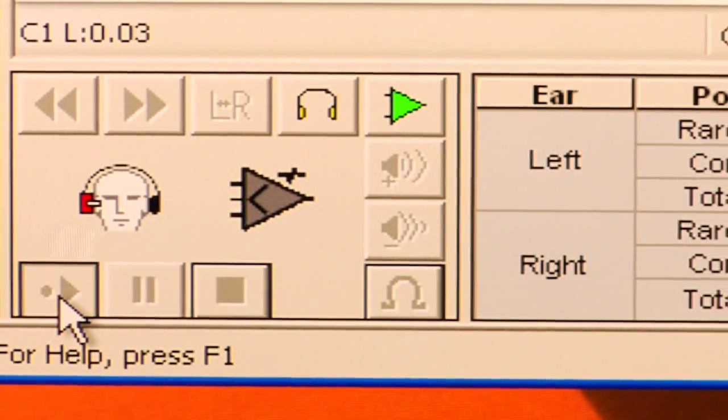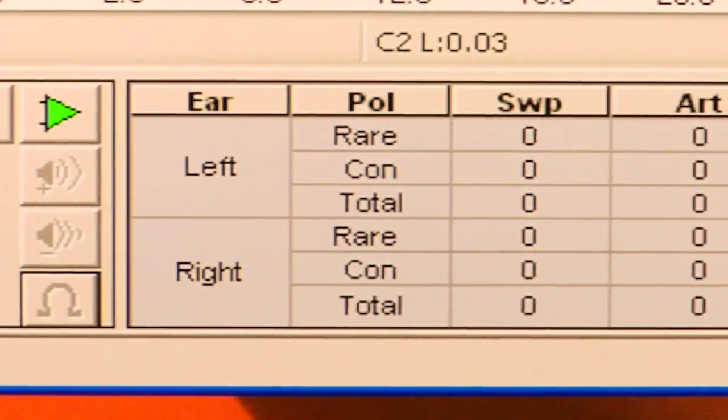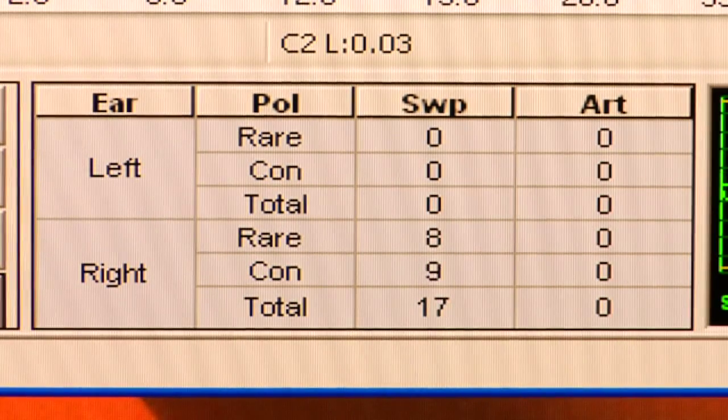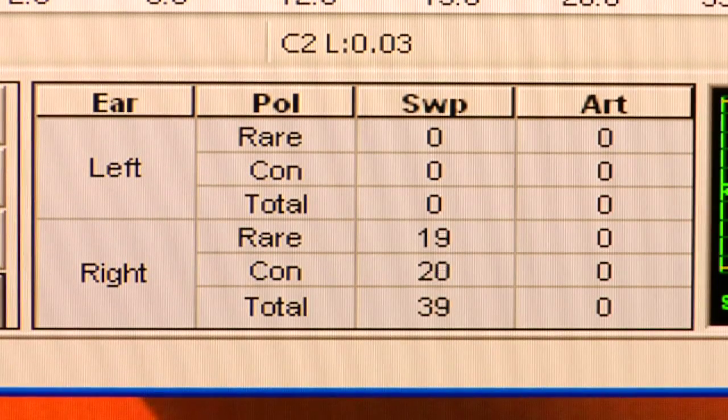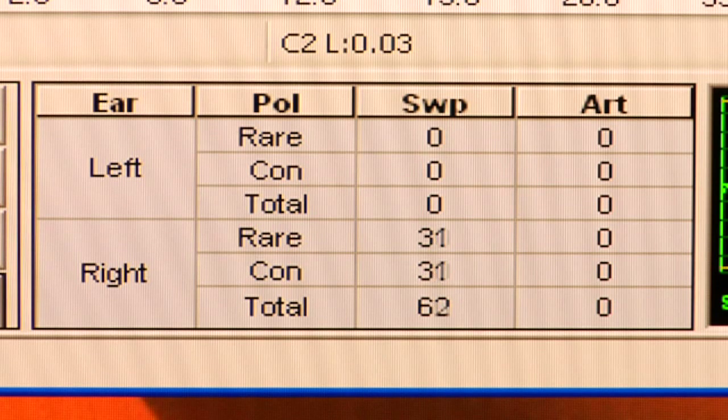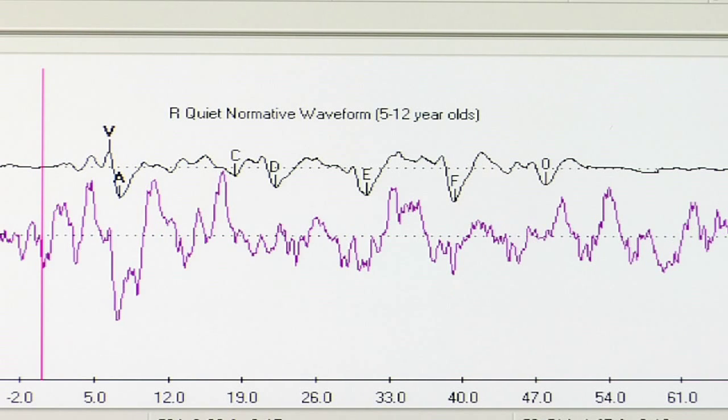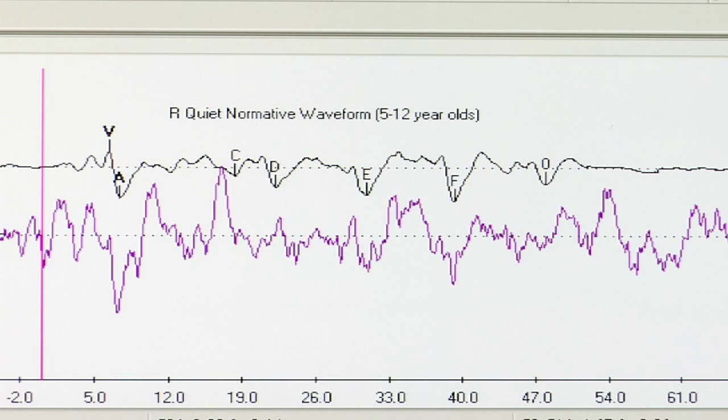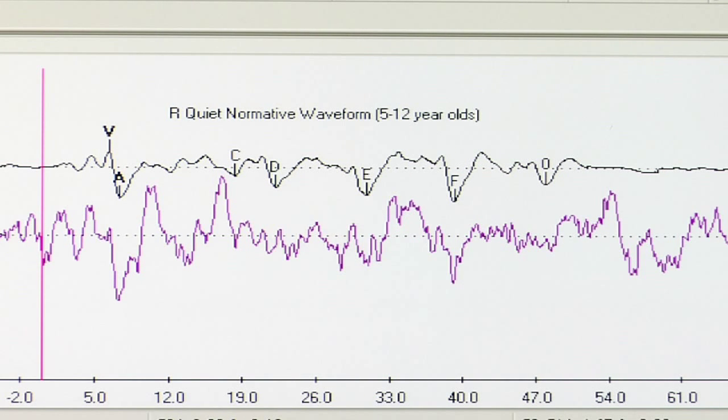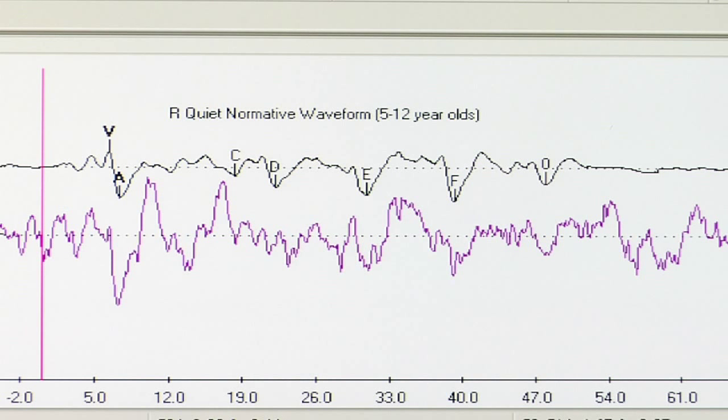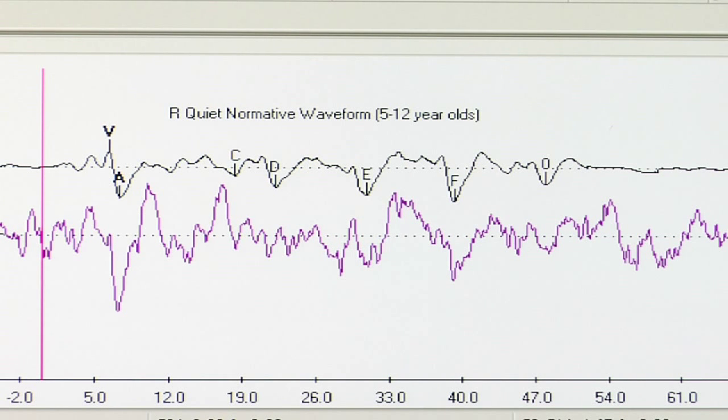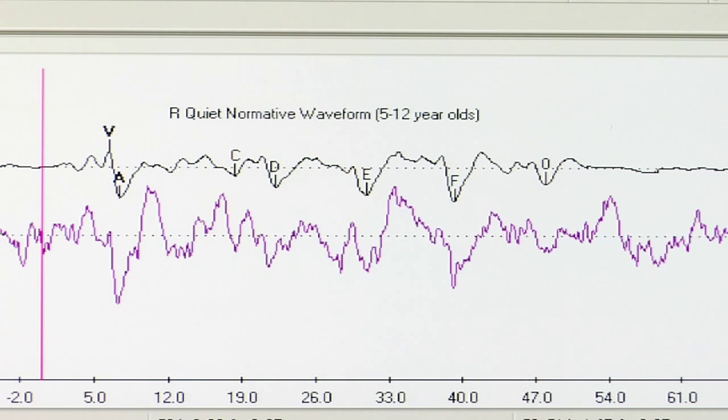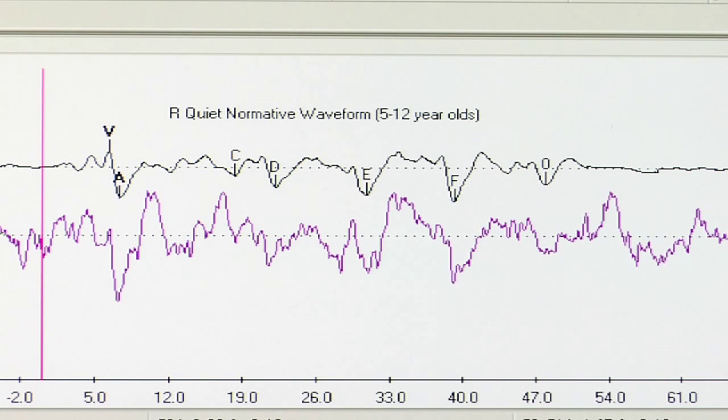You will be collecting two trials of the Biomark responses. Each trial consists of 3,000 artifact-free responses. The waveform that appears represents an average response. While collecting Biomark, you can compare the response to a template waveform. After about 500 stimulus presentations, you will start to see the response take shape.